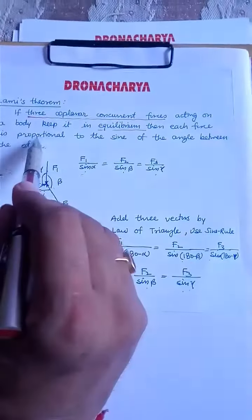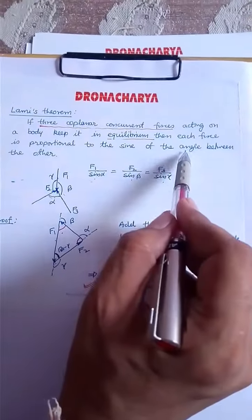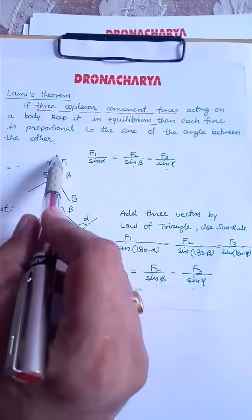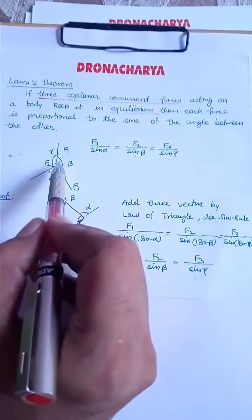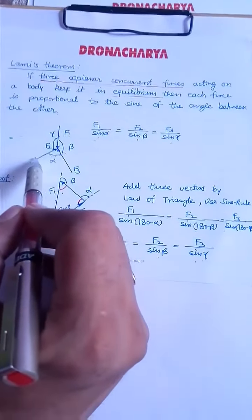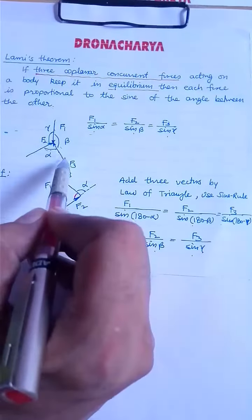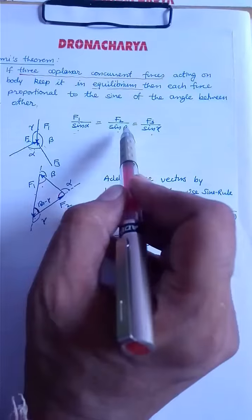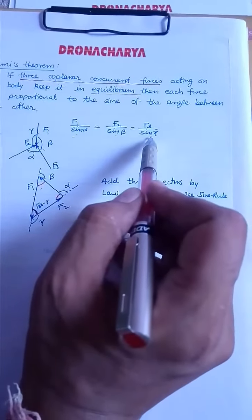Then each of the force is going to be proportional to the sine of the angle between the remaining two. That is, if I have F1, F2, and F3, the angle between F2 and F3 is alpha, against F2 it is beta, against F3 it is gamma. You will have F1 upon sin alpha equals F2 upon sin beta equals F3 upon sin gamma.